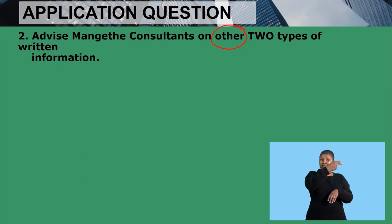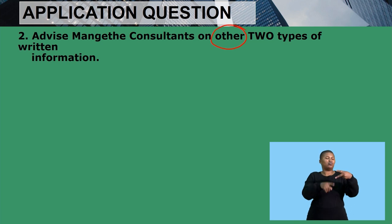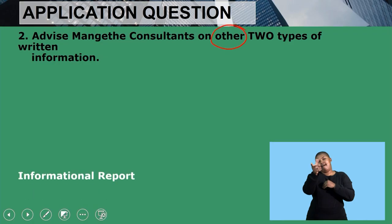Now let's move on to the second question: advise Mangete Consultants on other two types of written information. The term 'other' simply means that the business plan and the research reports we identified in the first question must not be discussed in this question.